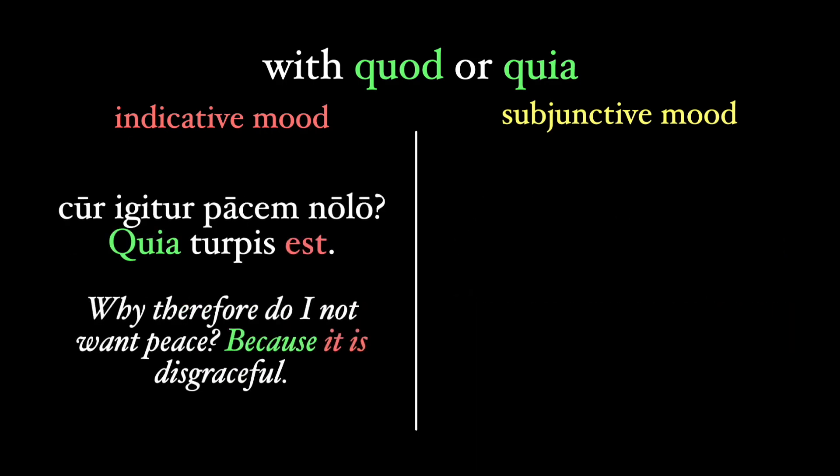Here's one from Cicero that uses the indicative. The causal clause about peace being disgraceful is factual from that first person's perspective.